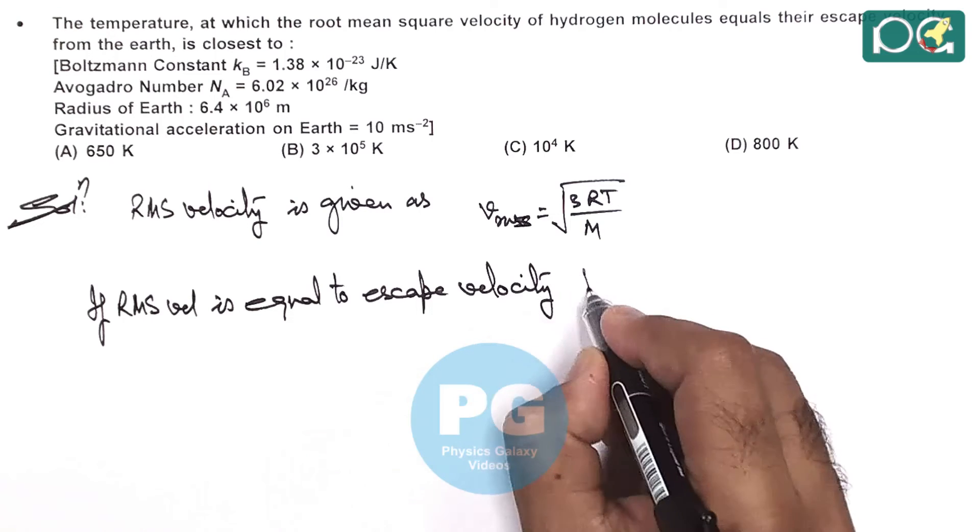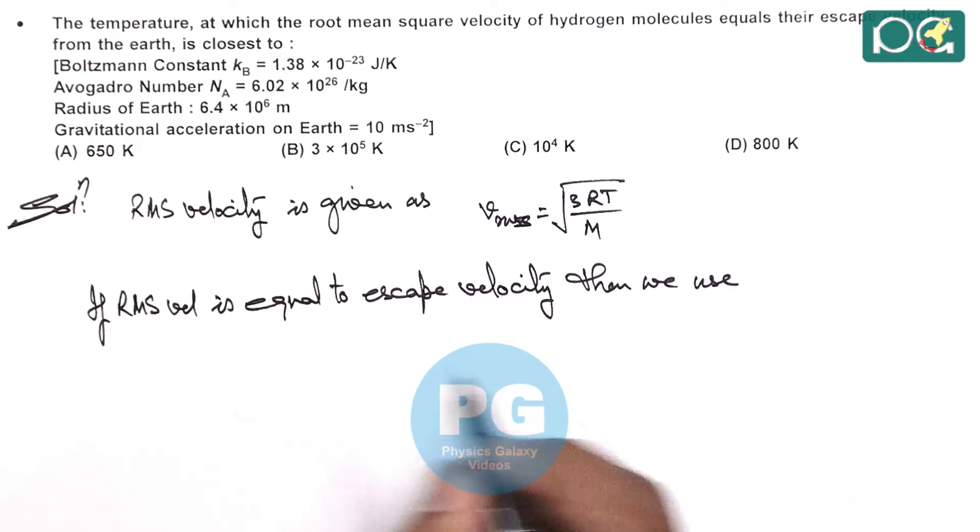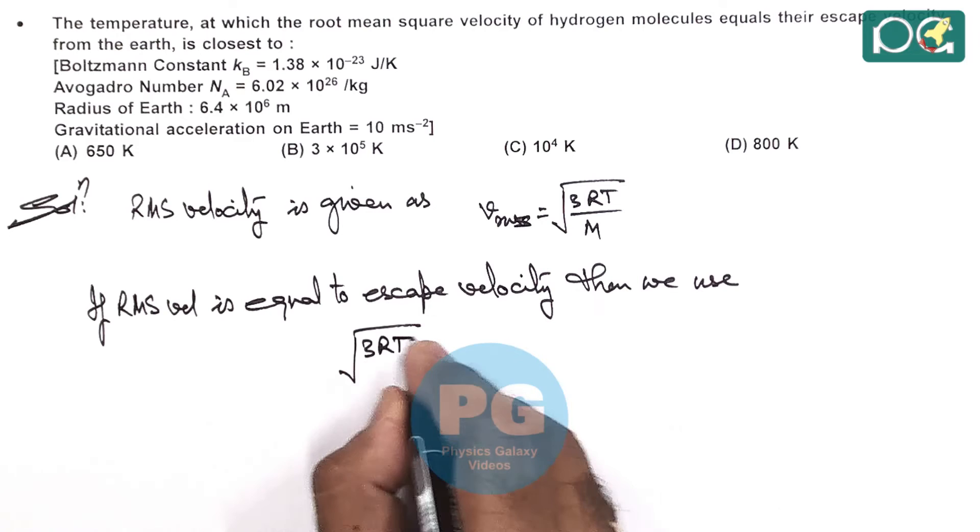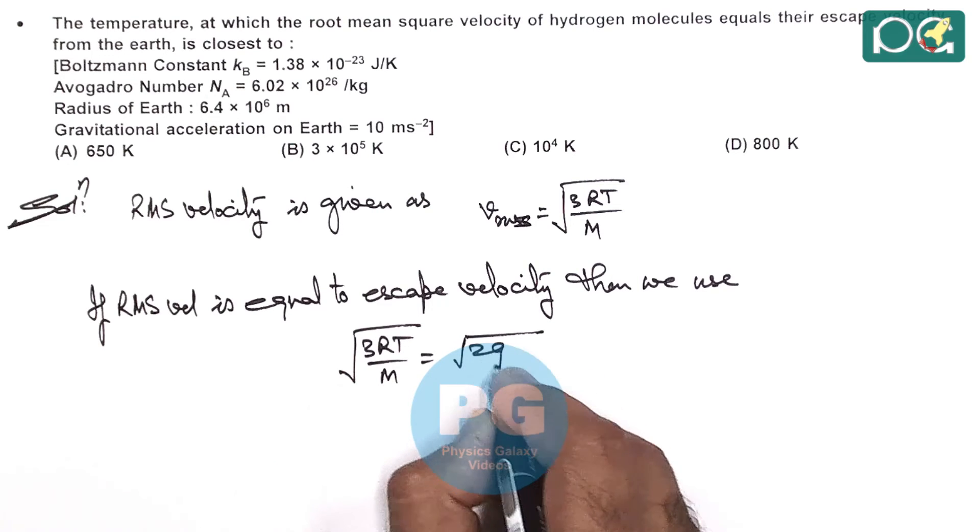then here we use escape velocity is root 2GR_E, so here we can write root of 3RT by M is equal to root of 2GR_E.